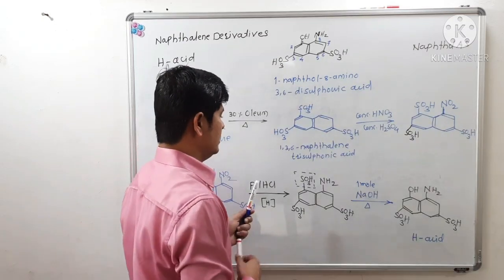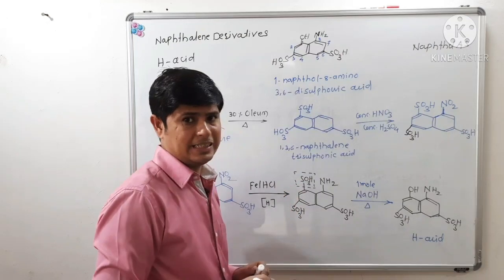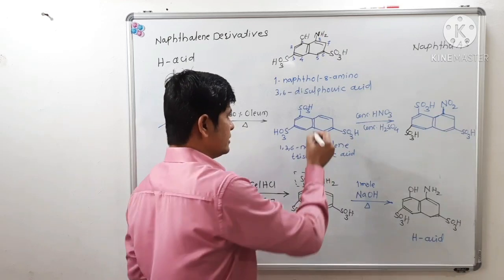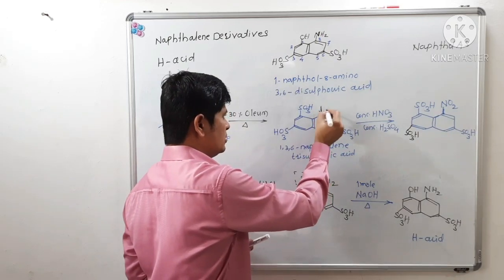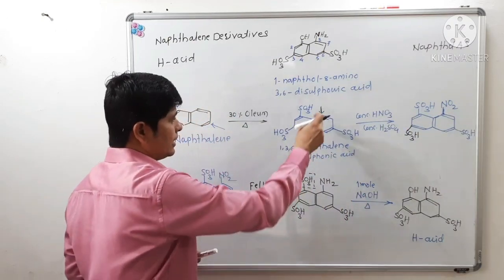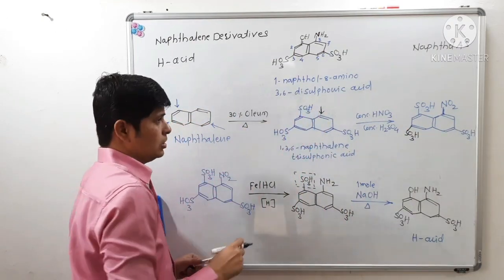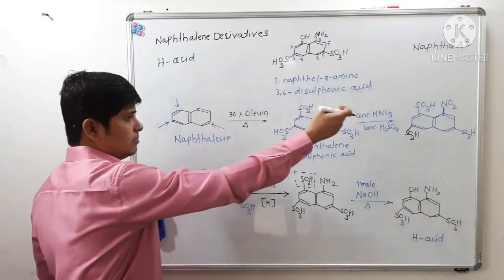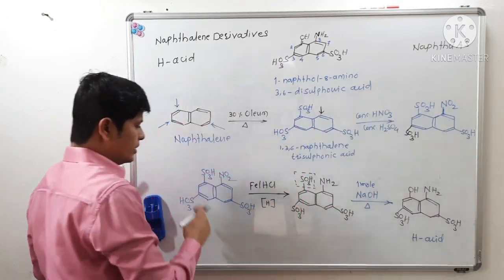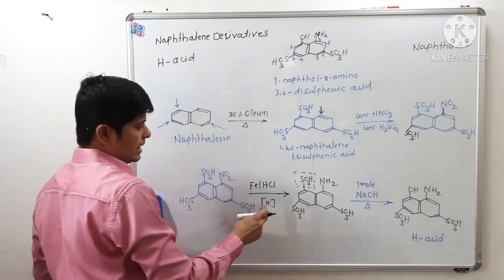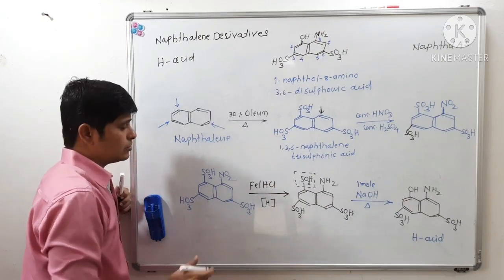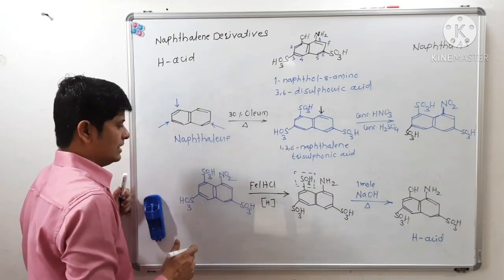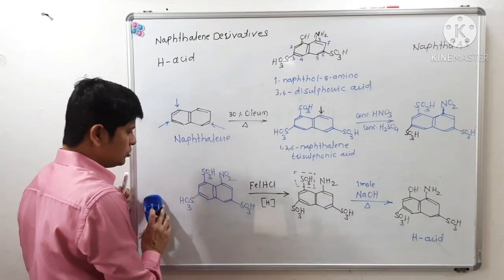In the next step, this 1,3,6-naphthalene trisulfonic acid is on nitration with concentrated nitric acid and concentrated sulfuric acid — that is the nitrating mixture — giving the nitro derivative, with introduction of a nitro group at this position. Then this nitro derivative is on reaction with iron and HCl, so the nitro group will get reduced into NH2 functionality.